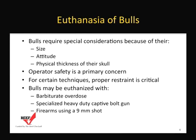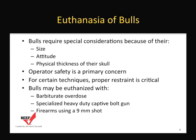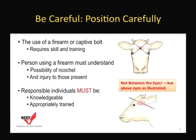Bulls require special considerations as well because of their size, attitude, and physical thickness of their skulls. Operator safety is a primary concern when euthanizing bulls. For certain techniques, proper restraint is going to be critical and required. Bulls may be euthanized with a barbiturate overdose, a specialized heavy-duty captive bolt gun, or with a 9mm shot using a firearm. The use of firearms or captive bolt requires skill and training. Persons using a firearm must understand the possibility of ricochet and the possibility of injury to those present.